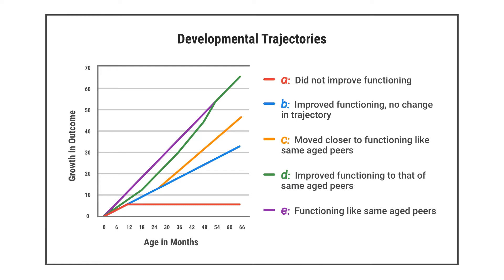Note that the red line is flat between 12 and 66 months. All other lines go up, indicating that these children acquired new skills over time.